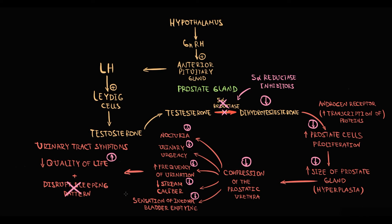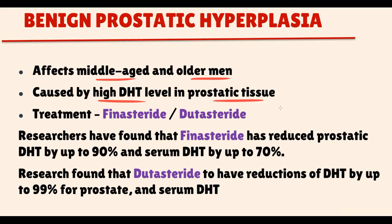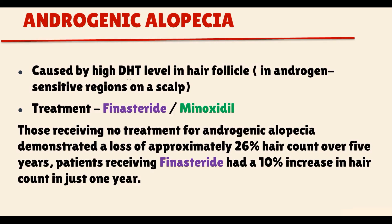This will greatly improve the quality of life in patients with benign prostatic hyperplasia. Currently we have two 5-alpha reductase inhibitors — finasteride and dutasteride — and they are both very efficient in the treatment of benign prostatic hyperplasia. Another indication for 5-alpha reductase inhibitors is androgenic alopecia, so-called male pattern hair loss.